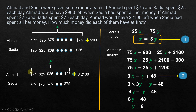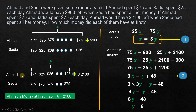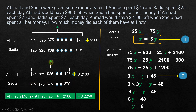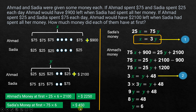Now we can find each person's initial amount. Ahmed's money: $25 × Y (which is 6) + $2,100 = $150 + $2,100 = $2,250. Sadia's money: $75 × Y (which is 6) = $450. So Ahmed had $2,250 and Sadia had $450 at first. This is how we solve the problem using algebra.